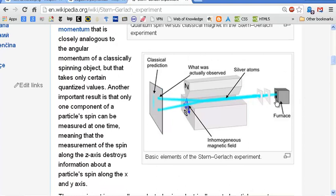What you have here is a furnace, and you put in the furnace some solid silver. The furnace heats it up, and what you get is silver atoms coming out of this furnace and going down here.